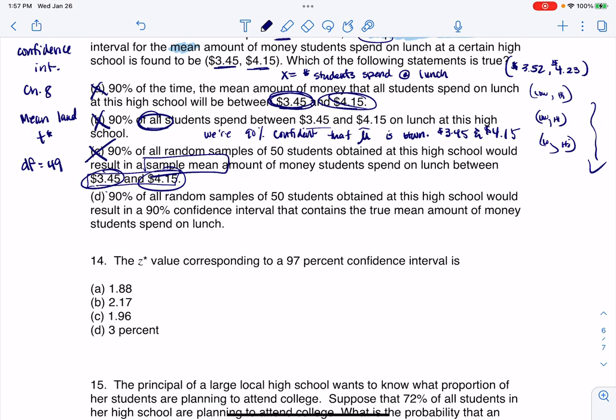Let's look at option D. 90% of all random samples of 50 students obtained at this high school would result in a 90% CI that contains the true mean amount of money. There it is - this is phrasing for we think the parameter is in that interval. Because the only way to actually find the parameter is to go talk to all of the students, but we're not going to do that. We're just going to talk to 50 of them. But 90% of the time we do this, we think that we're going to capture the parameter. 90% of our intervals would be good in the long run, and about 10% would be bad. So D is our answer.